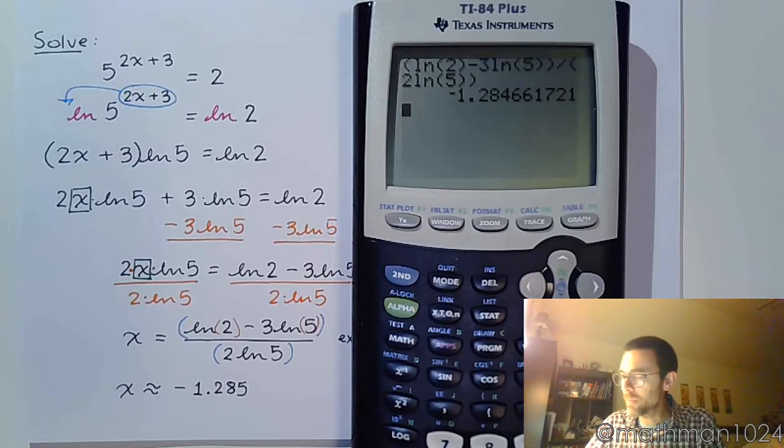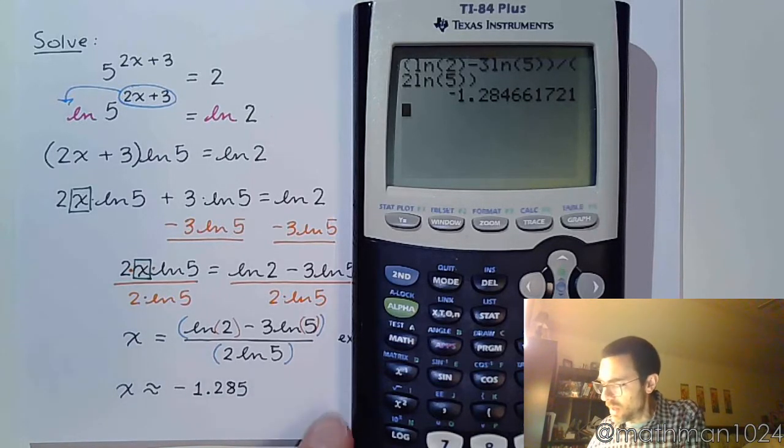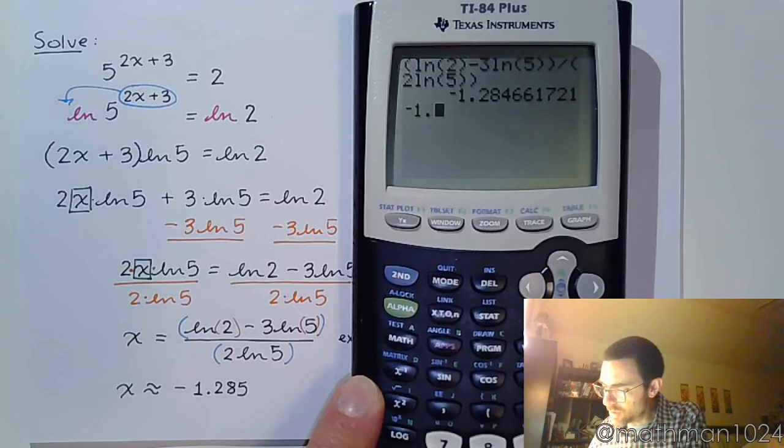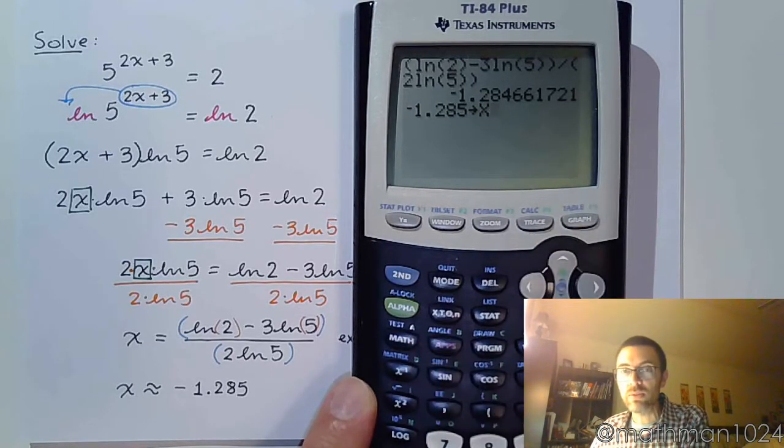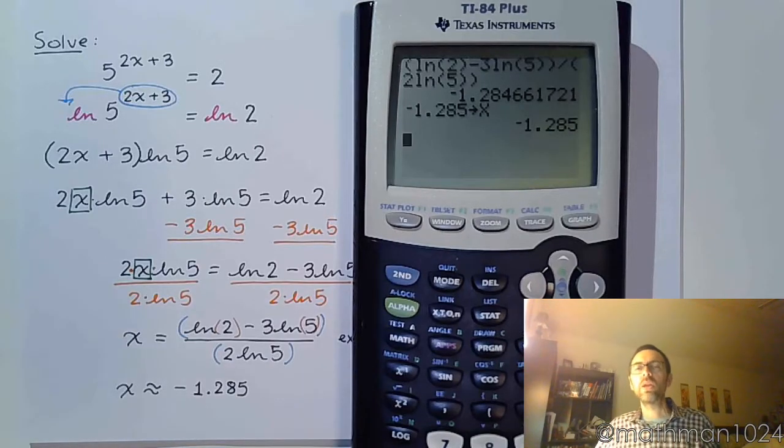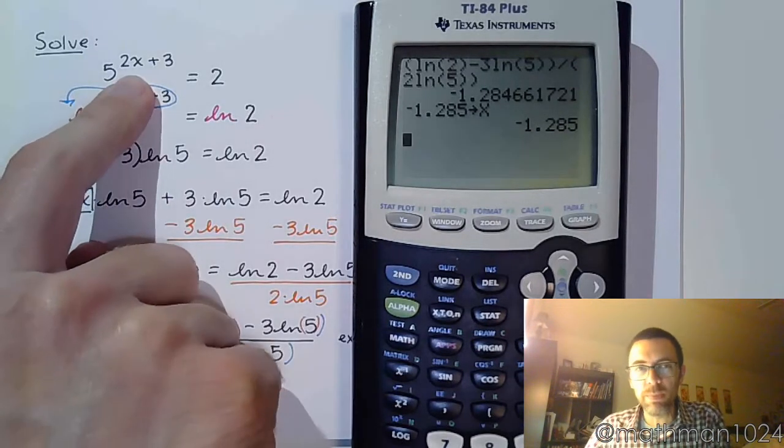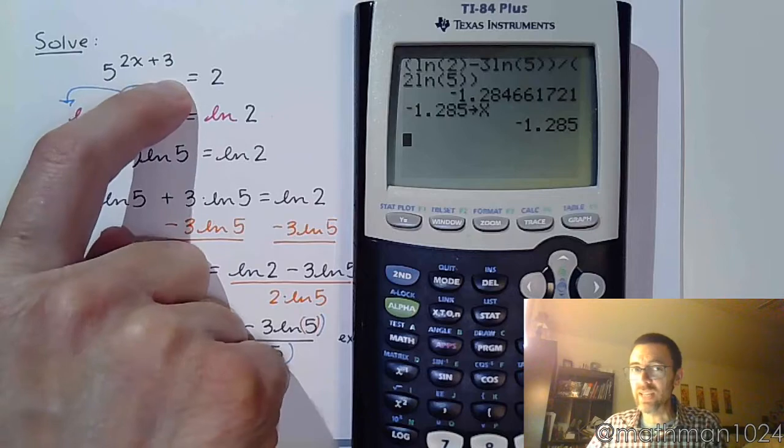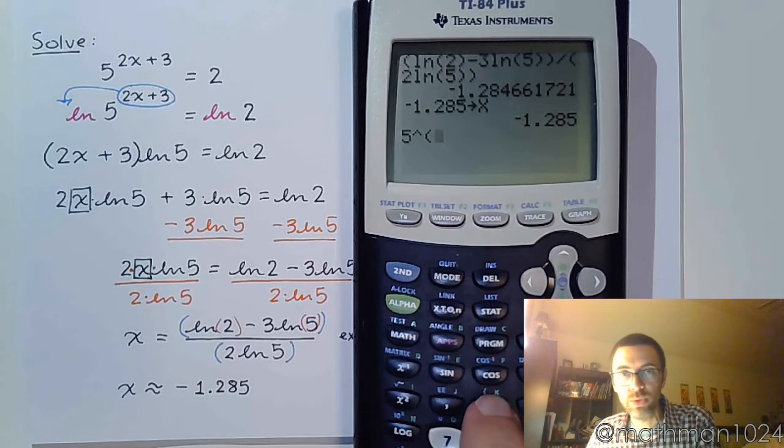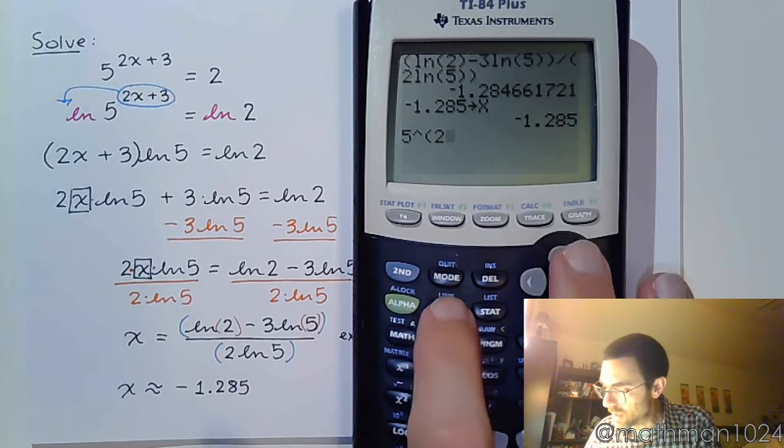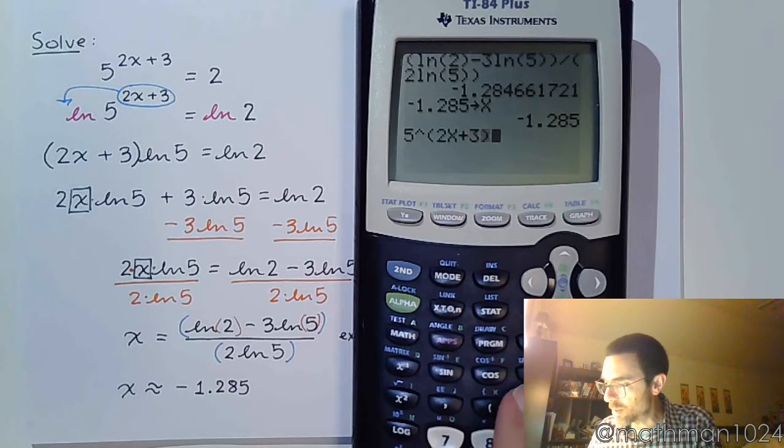Now let's check this. So I'm going to take negative 1.285. I'm going to store this in for x. And now I'm going to go back and I'm going to type my original expression. Let's see if I can get this to equal 2. So 5 raised to the group, so parentheses, 2x plus 3.